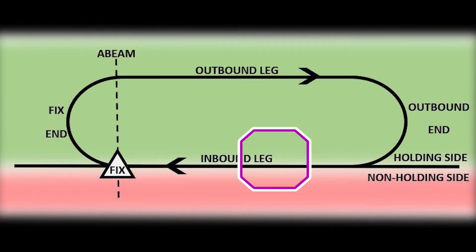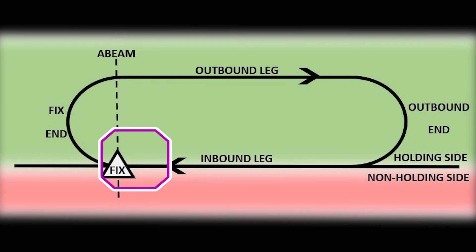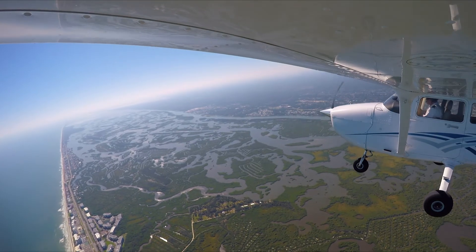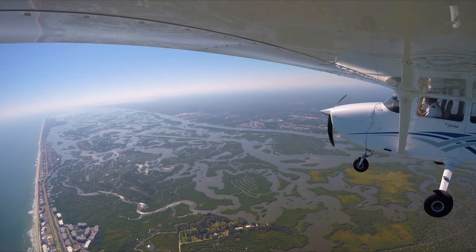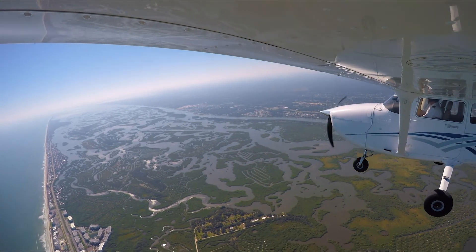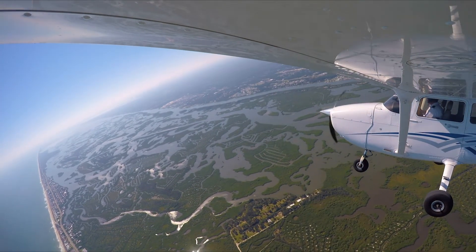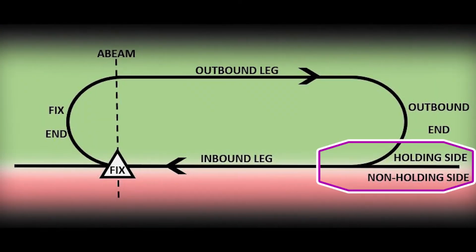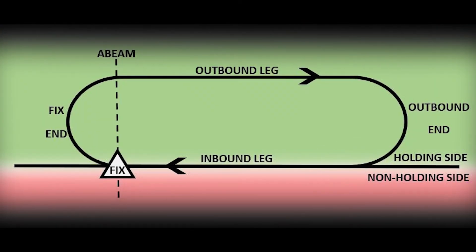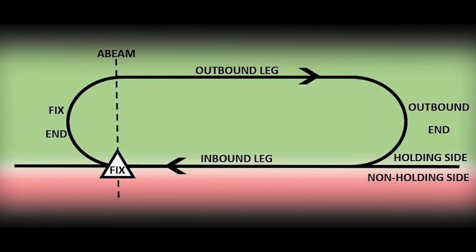The inbound leg of a hold begins after the standard rate turn from the outbound leg is completed and the pilot levels the aircraft's wings, or the pilot intercepts the inbound course to the fix, whichever happens first. This leg terminates after reaching the holding fix.